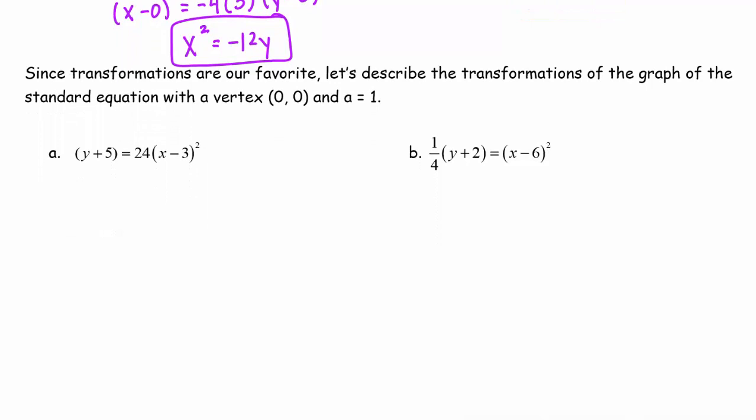So lastly, we have transformations. Yay! They're our favorite. So we're going to figure out what happens to a standard equation with a vertex at (0,0) and p = 1. So what I want you to do is I want you to try this. Because we've done transformations already in a previous unit, I want you to do that. But also remember I want the squared term alone first.